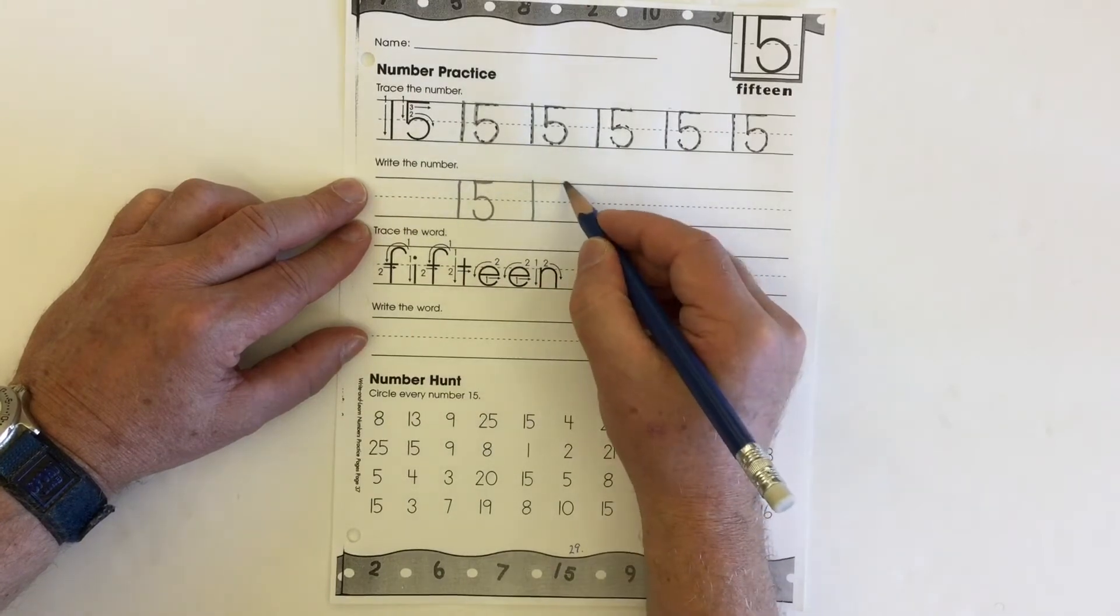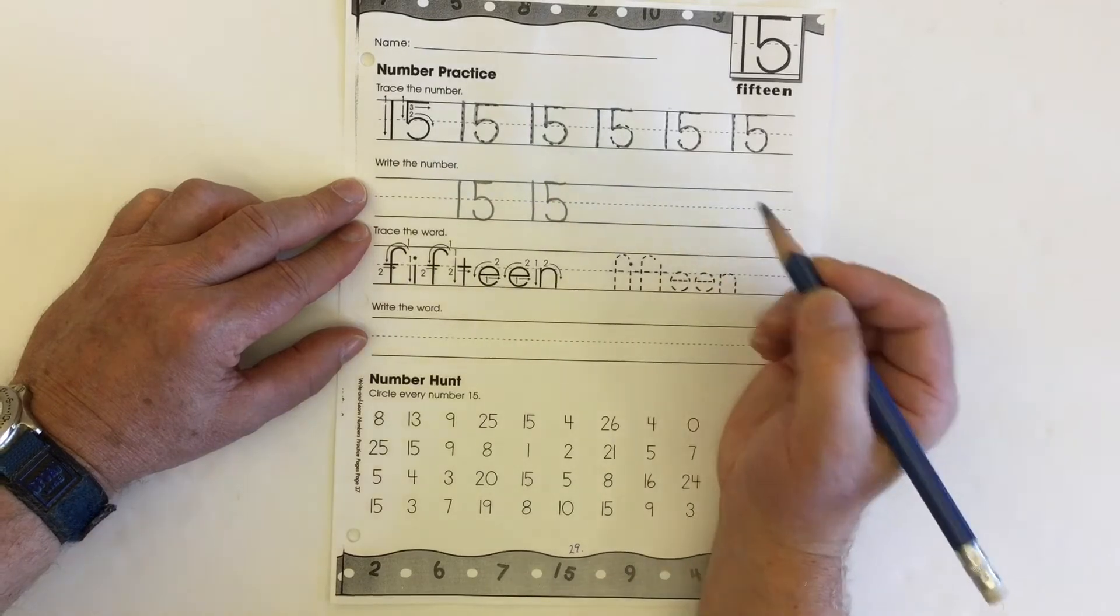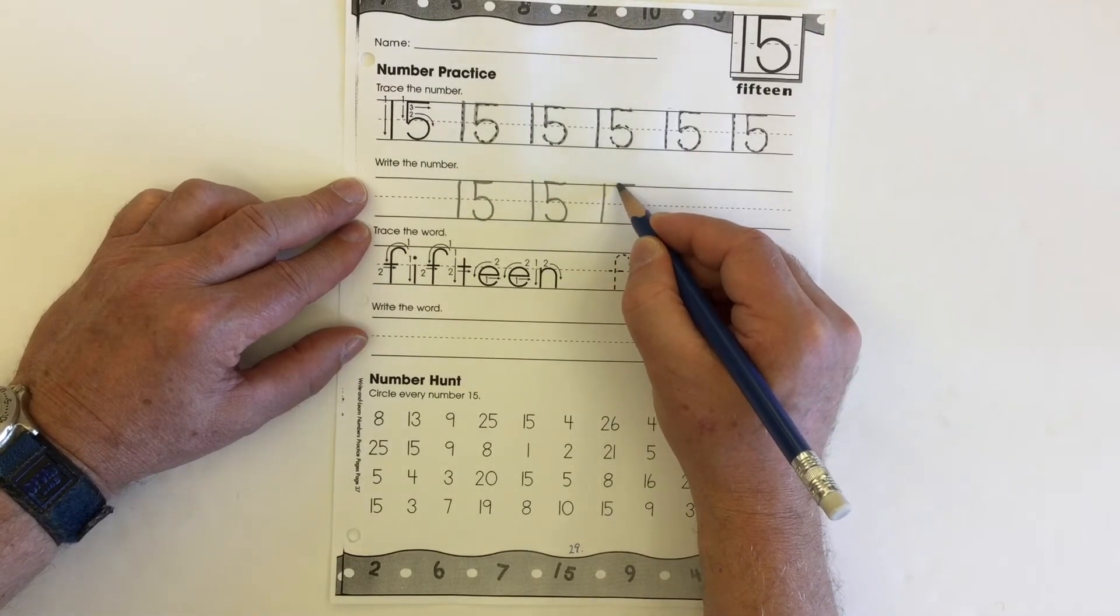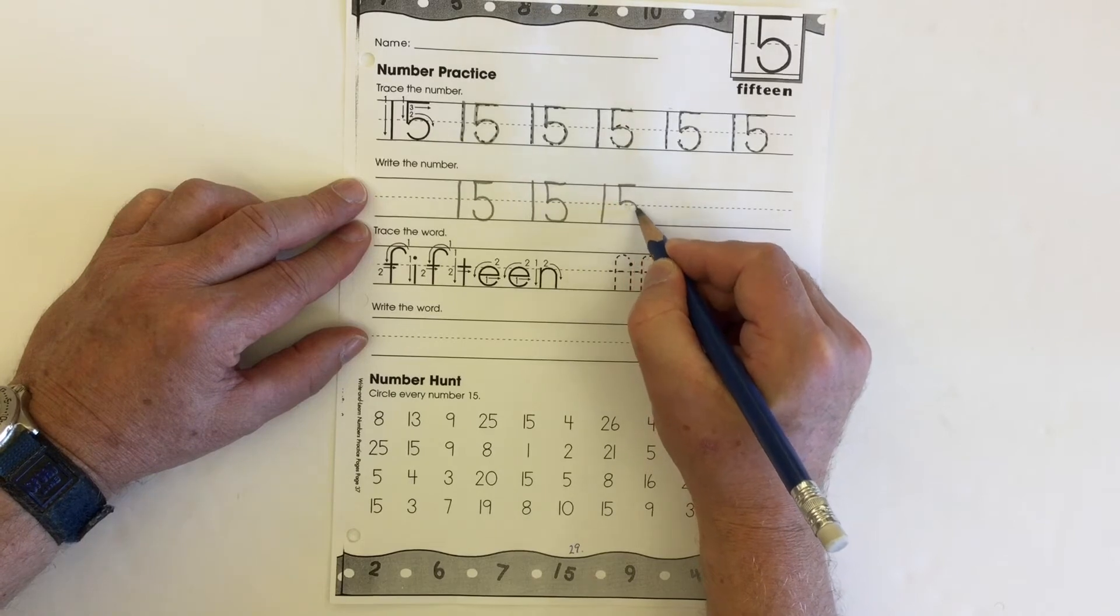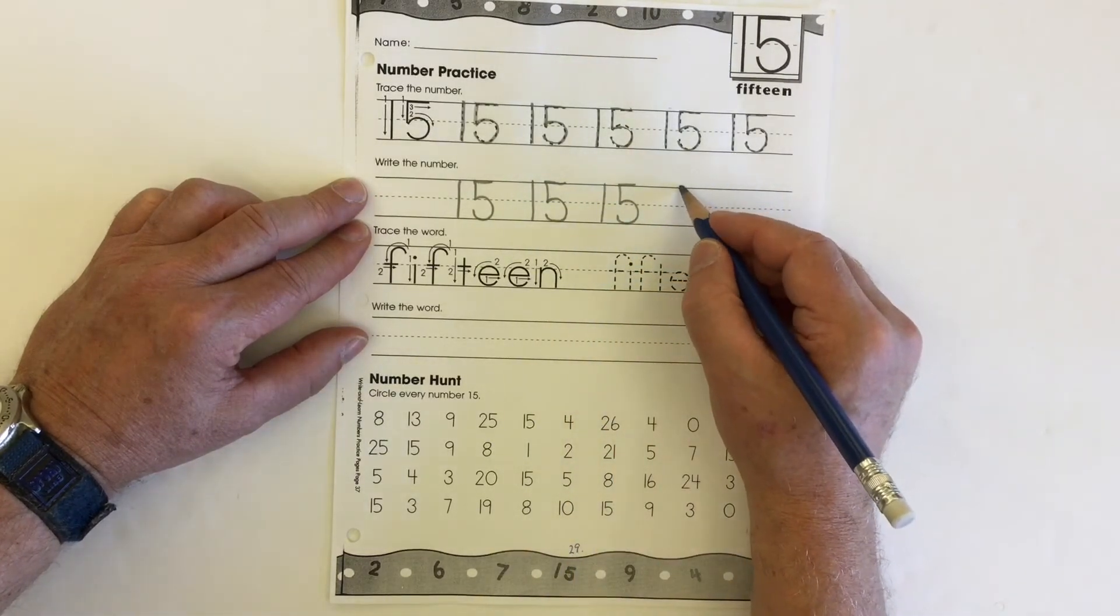The one, and then the five goes part one, two, three, and around. One comes down, five goes across, down to the middle. Turn it around. Make sure your five is facing the correct way. We don't want a backwards five.